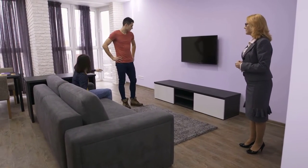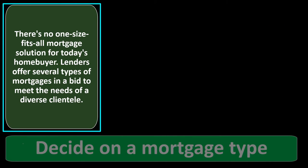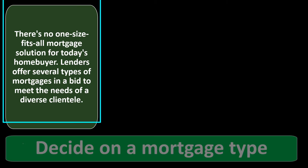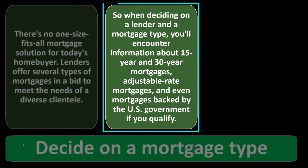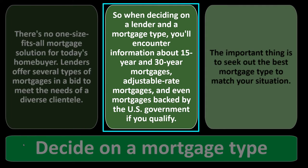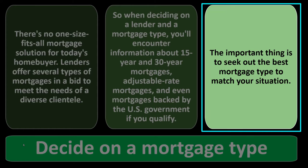As you explore mortgage types, you probably want to get advice not only from people engaged in the home purchasing process, such as the lender or your mortgage broker, but possibly someone else like a CPA firm, your tax preparer, or an accountant — someone you can pay who is not directly invested in the outcome of you purchasing the home, since their involvement could bias their advice. When deciding on a lender and mortgage type, you'll encounter information about 15-year and 30-year mortgages, adjustable mortgages, and even mortgages backed by the U.S. government. If you qualify, seek out the best mortgage type to match your situation.